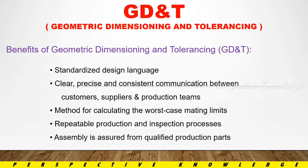GD&T benefits include: standardized design language; clear, precise, and consistent communication between customer, supplier, and production team — meaning communication is easy to understand. It provides a method for calculating worst-case mating limits, repeatable production and inspection processes, and assured assembly from qualified production parts. Using GD&T symbols, we can easily understand diagrams. When the product and quality are at the right level, we can easily understand symbols for drawing and inspection, ensuring accurate, clear, and proper communication in the right dimensions.